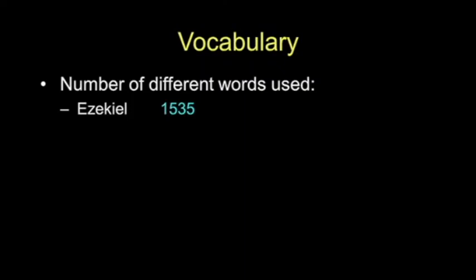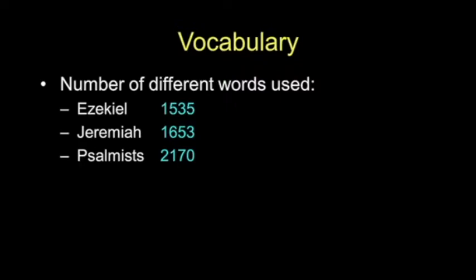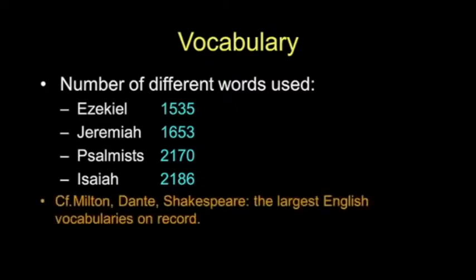His vocabulary is interesting. They measure vocabulary by the number of different words a writer uses. Ezekiel uses about a little over 1,500. Jeremiah about 1,600. The Psalmist collectively a little over 2,000. But Isaiah is almost 2,200. In the Jewish sense, Isaiah would head the list in their domain, just as Milton, Dante, and Shakespeare are regarded as having the largest English vocabularies on record.